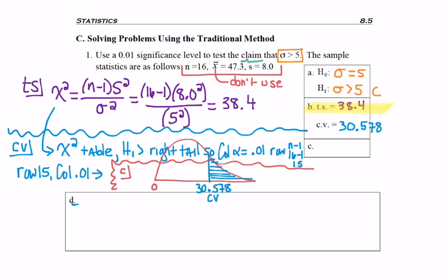And now I'm ready to list my test statistic. I just know that 38 is larger than 30, so I draw it somewhere to the right. So my test statistic is to the right, and thus it's in the critical region. So I reject H0.